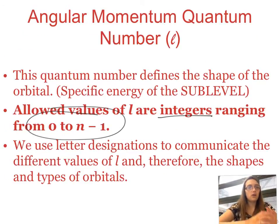So the next quantum number that we're going to focus on is l, and this is the angular momentum quantum number. So this quantum number defines the shape of the orbital. Which also gives us the specific sublevel. So the allowed values of l are any integers ranging from 0 to n minus 1. So if n is 4, then our values of l could be 0, 1, 2, or 3.